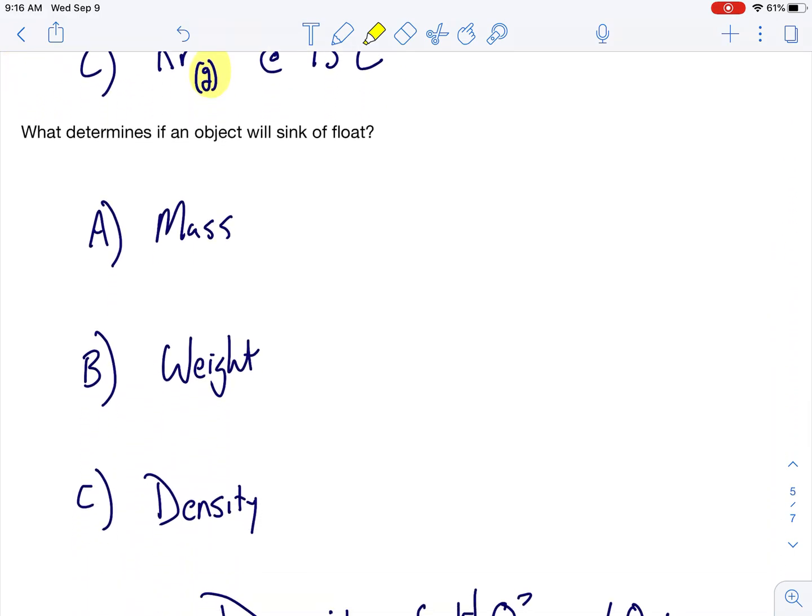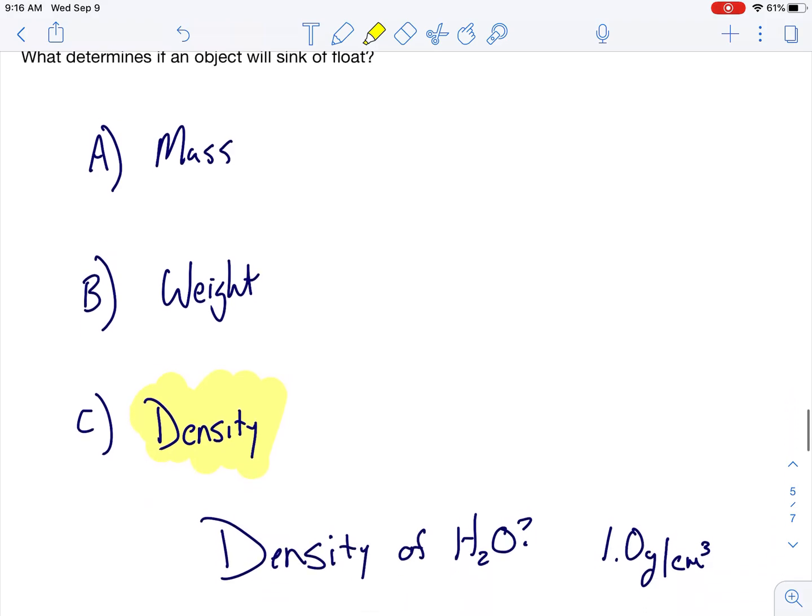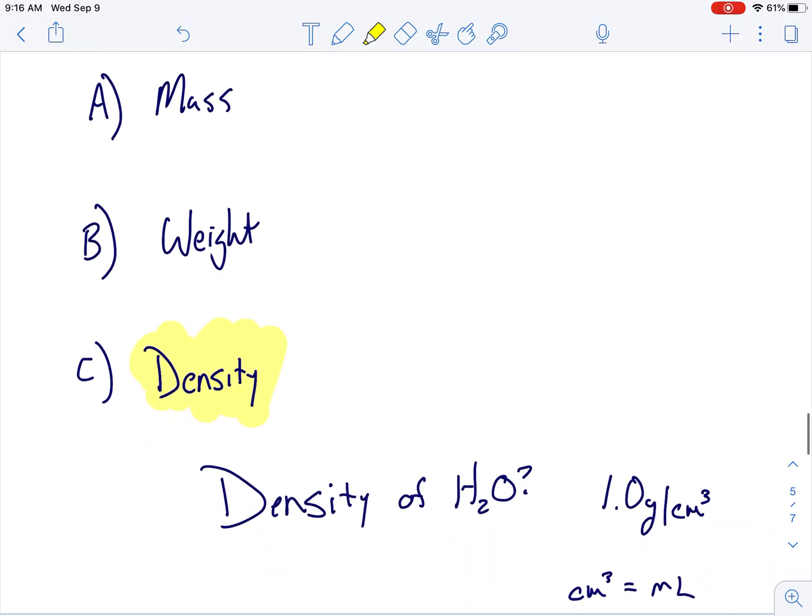What determines if an object will sink or float? Mass, weight, or density? Hopefully, you guys realize its density. If its density is greater than the substance you're putting it in, it will sink. If it is less than the substance you're putting it in, it will float. I need you guys to know the density of water. It is 1.0 gram per centimeter cubed. Remember that centimeters cubed and milliliters are equivalent to each other. If the density of something is less than that, it would float. If it is more than that, it would sink in water.